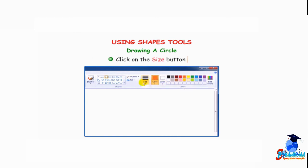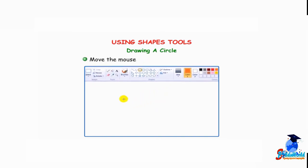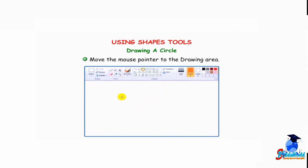Click on the Size button. Select the width for the selected tool. Move the mouse pointer to the drawing area. Press the left mouse button and drag the mouse on the drawing area to draw a circle.